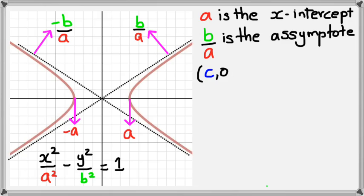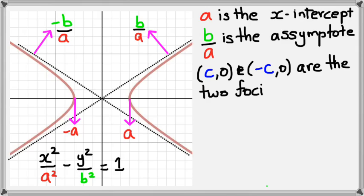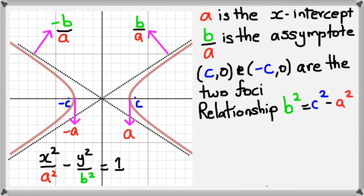Next up, we're going to have a look at the points c0 and negative c0. These are the two foci points of the hyperbola, and they fall just next to a. If you're wondering about the relationship of c, I'm just going to write it down now. b squared is equal to c squared minus a squared. So that is how you find the foci.